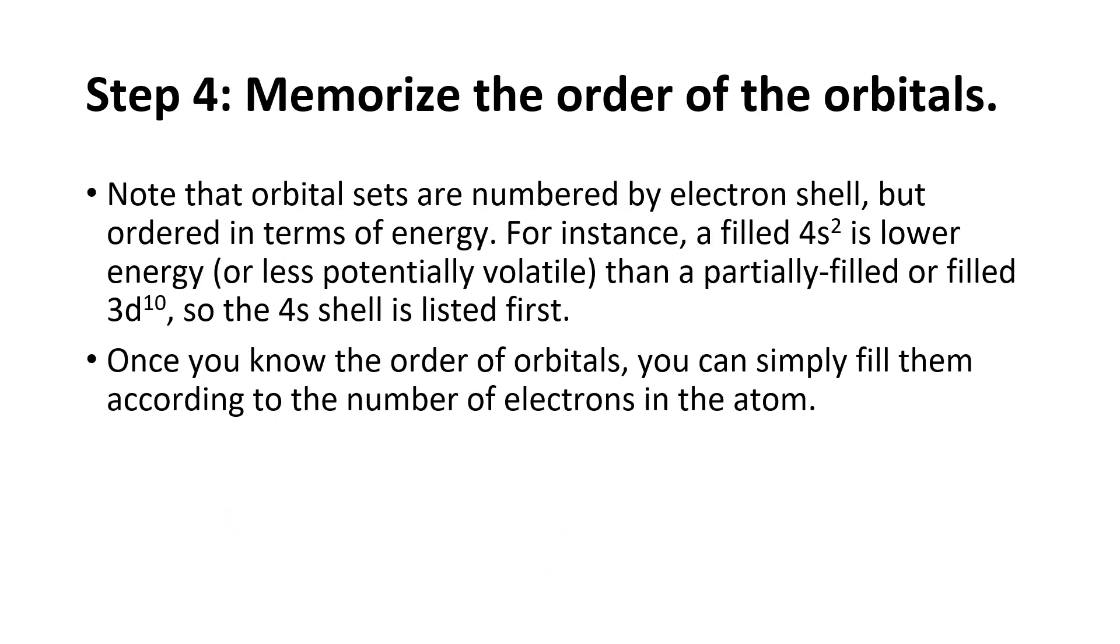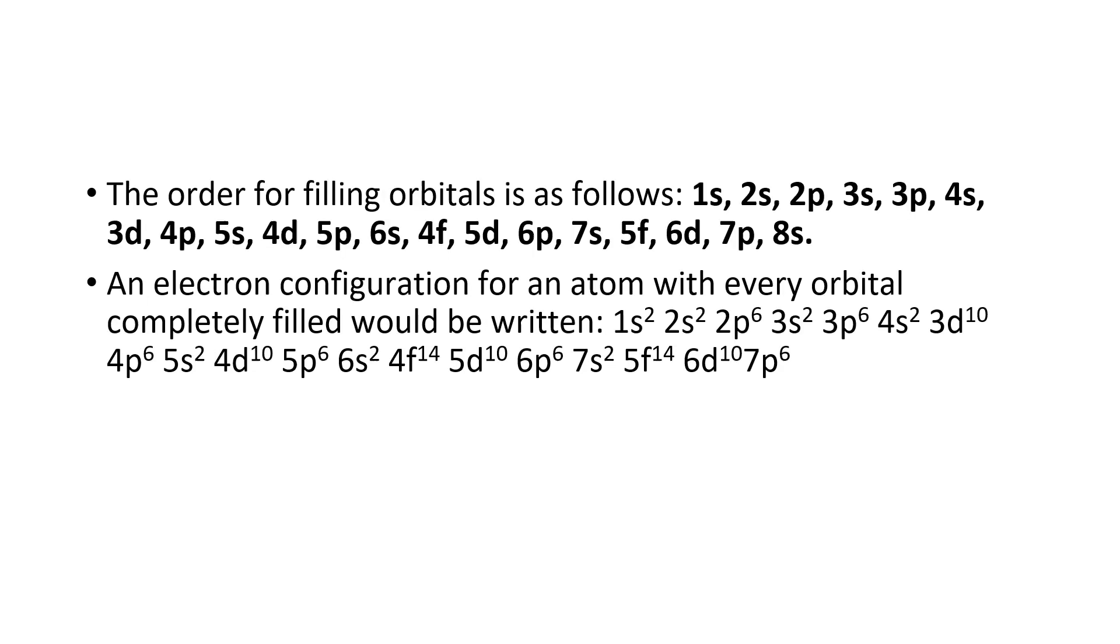So then you memorize the order of the orbitals, like 4s, then 3d, 4p, stuff like that. 1s, 2s, 2p, 3s, 3p, 4s, 3d, 4p, 5s. If you want to, you can probably take your paper periodic table and kind of put down the numbers and the blocks. And I can walk you all through that as well if you need help with that.